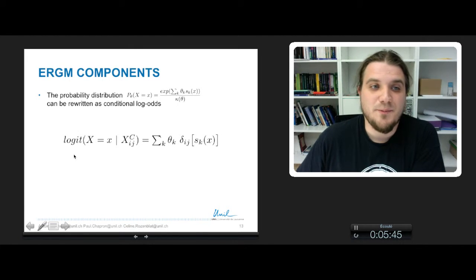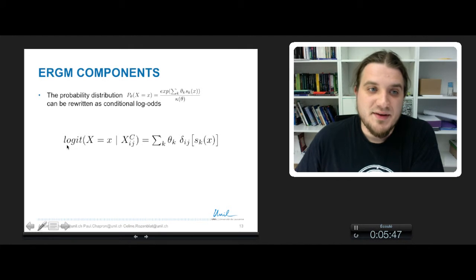Because instead of considering the probability to observe your network in the space of the networks that are compatible with your network statistics, you only consider the probability to observe one edge between two nodes i and j. In fact, this expression is the probability to observe your network x given the complement of xij.